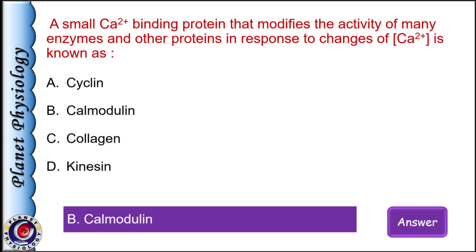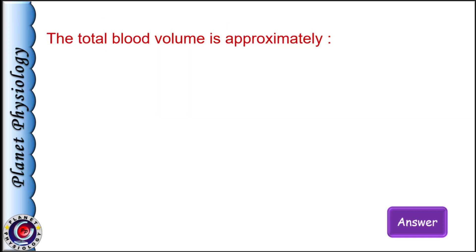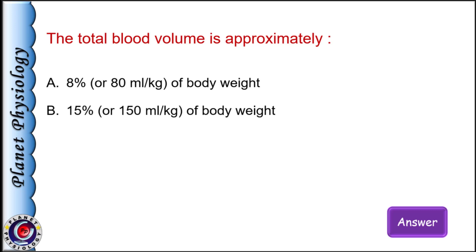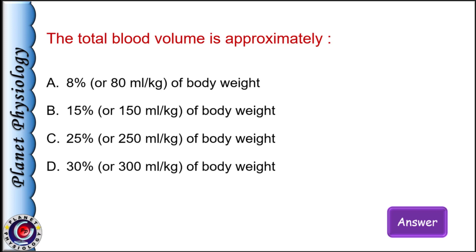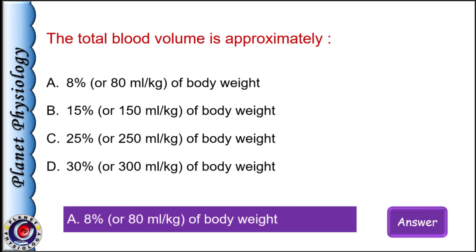Now let us see some questions on body fluid compartments. The total blood volume is approximately: a) 8% of body weight, b) 15% of body weight, c) 25% of body weight, and d) 30% of body weight. The answer is option A: 8% of body weight, which is 80 ml per kg.